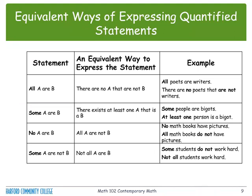Equivalent ways of expressing quantified statements. As you see on the left column, the statement in the form of all A are B — an equivalent way to express this is: there are no A that are not B. For example, all poets are writers can be written as there are no poets that are not writers. For the statement some A are B, an equivalent way is: there exists at least one A that is a B.